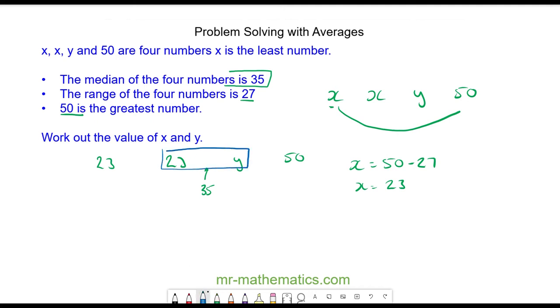To work out the average, we do 23 plus y divided by 2, and that equals 35. To work out the value of y, we treat it like an equation and multiply both sides by two, and these will cancel.